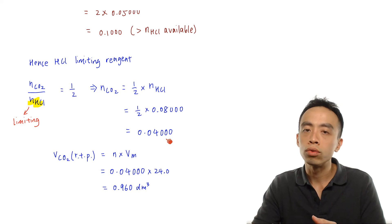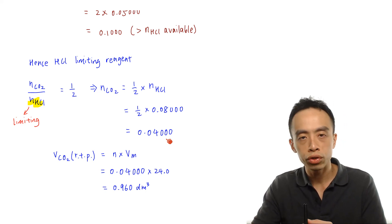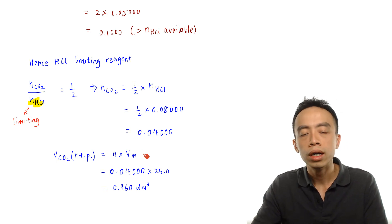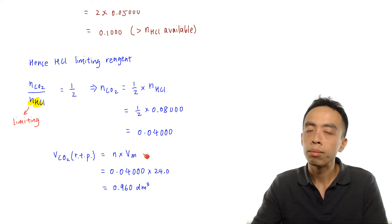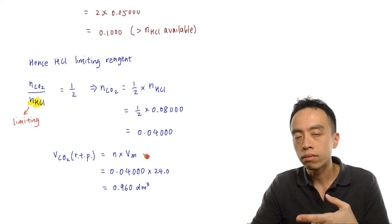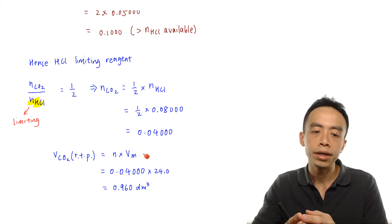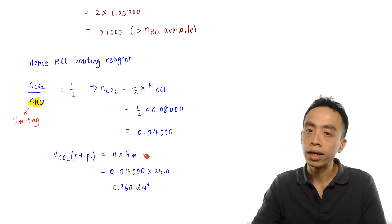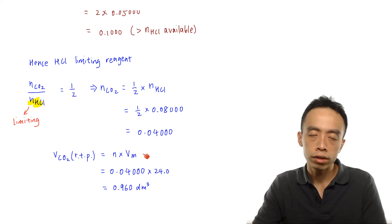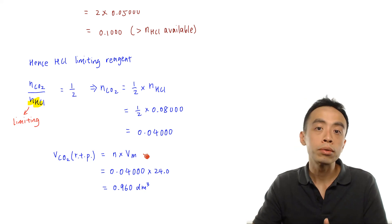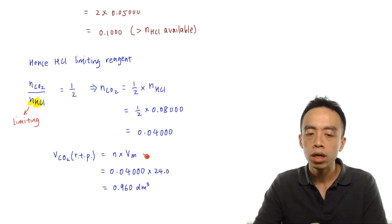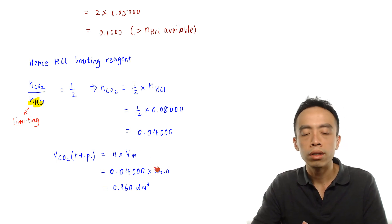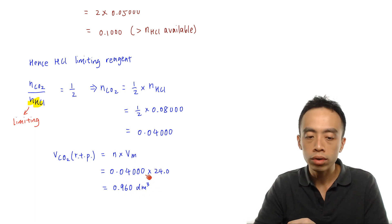The question asks for the volume of CO₂ at room temperature and pressure. We multiply the moles of CO₂ by the molar volume. Molar volume is the volume of one mole of gas at a given temperature and pressure. At RTP, molar volume = 24.0 dm³; at STP, it is 22.7 dm³ — important values to remember. So the volume = 0.0400 × 24.0 dm³ = 0.960 dm³.